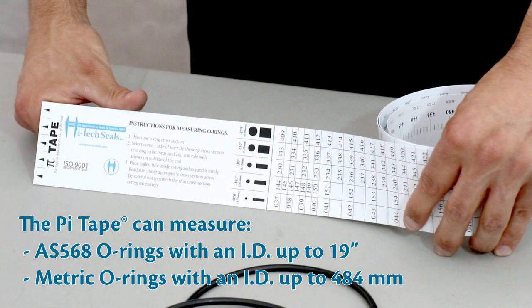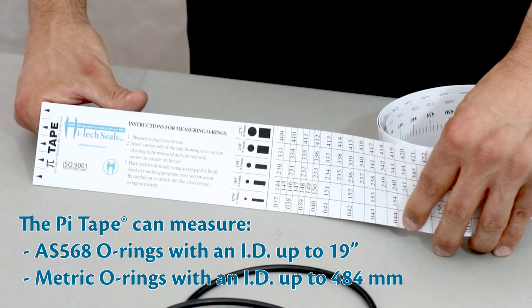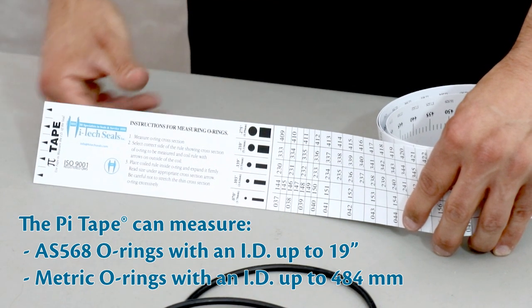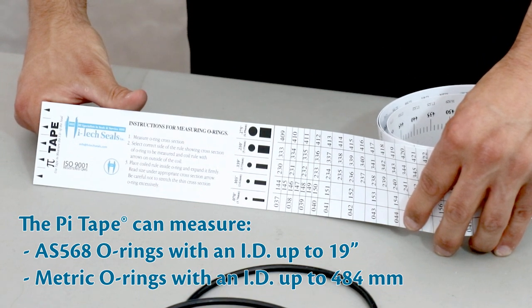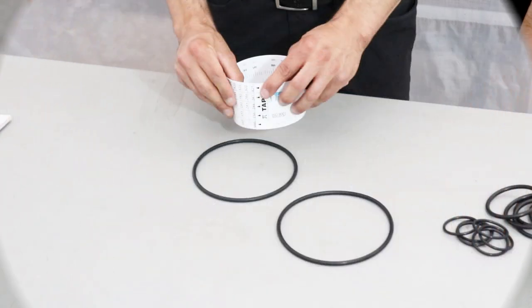Our pi tape can measure AS568 o-rings on one side and metric o-rings on the other with an ID up to 19 inches or 484 millimeters. Use the cross section legend on the tape to determine the cross section of the o-ring.